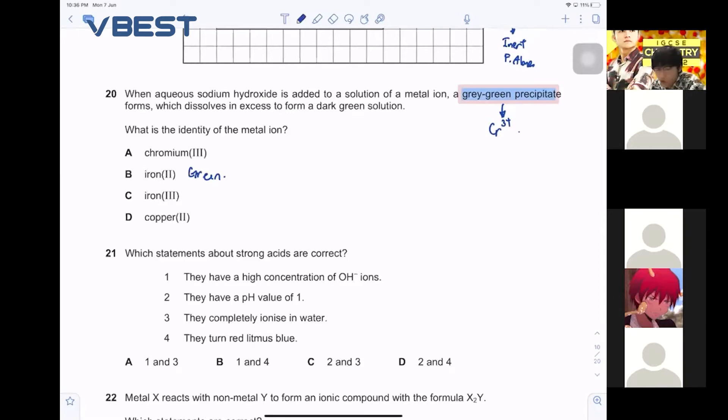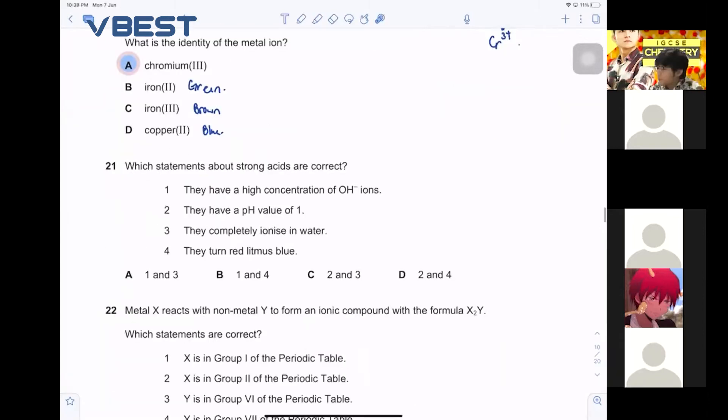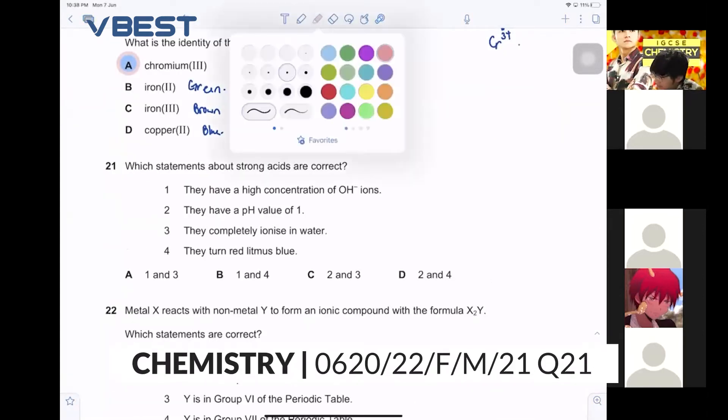I think it's A, right? Okay, chromium, this is brown. This is blue. And somehow they say dissolve in excess. Which statement about strong acid is correct?